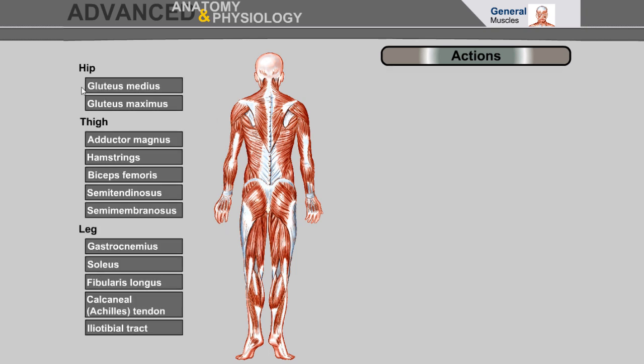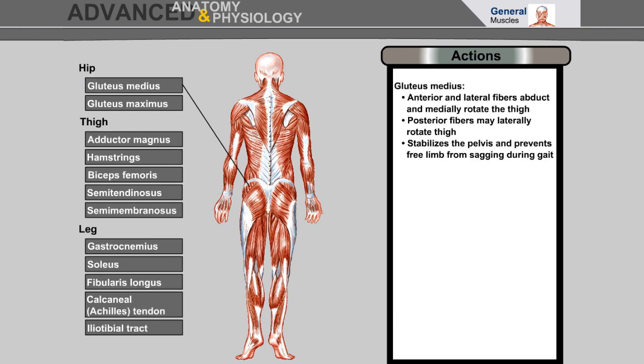Gluteus medius: anterior and lateral fibers abduct and medially rotate the thigh; posterior fibers may laterally rotate the thigh. It stabilizes the pelvis and prevents the free limb from sagging during gait.